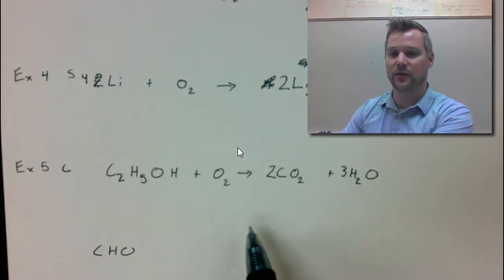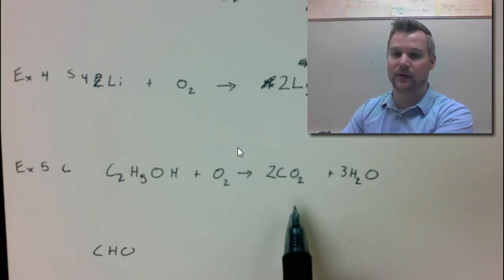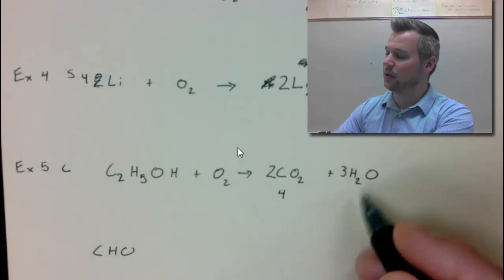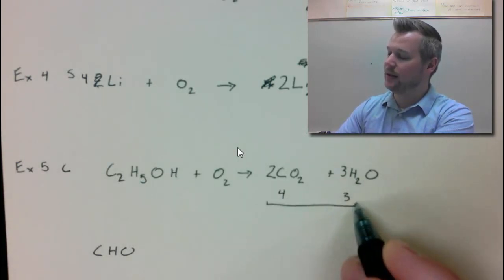And then what I suggest you do is write down your number of O's underneath the two products on the right-hand side. 2 times 2 gives me 4. 3 times 1 gives me 3. And then together, that equals 7.